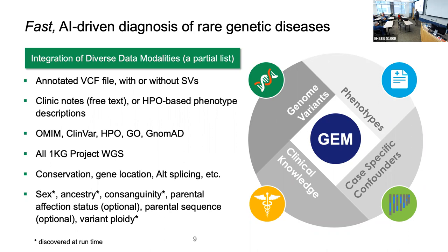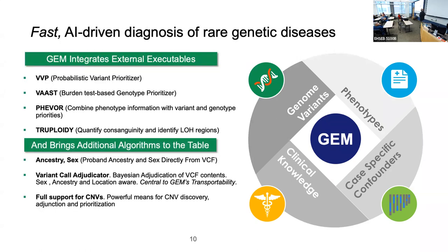GEM computes a gene model at every site using gnomAD data to estimate ancestry, transcript, and region probabilities. It quantifies consanguinity, identifies LOH regions, and adjusts models accordingly — for example, increasing the prior for simple recessive disease in LOH regions. It accepts parental sequences in duo or trio formats, and computes novel data types including the concept of ploidy as opposed to zygosity, which proves especially useful for copy number variant determination.